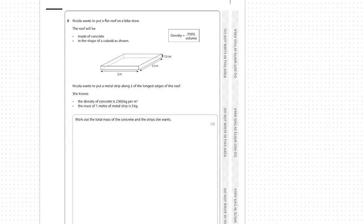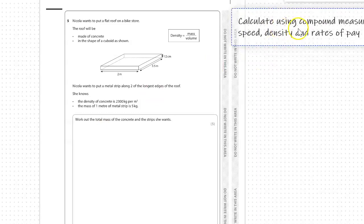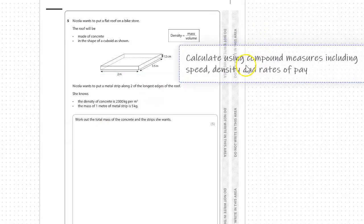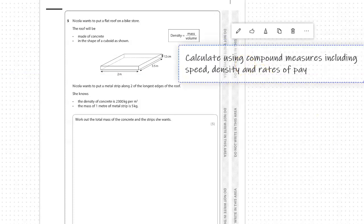Reading through the question, there are quite a few steps we have to follow. I like to put the subject content up as well. The background skill is to calculate using compound measures, including speed, density, and rates of pay. The compound measures we use are those associated with density.